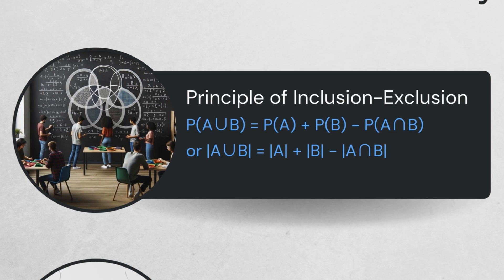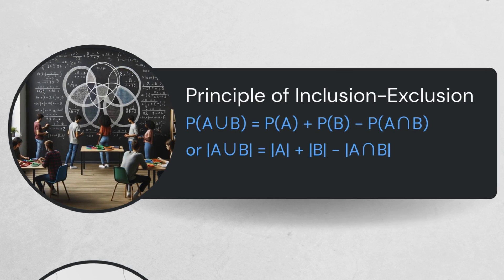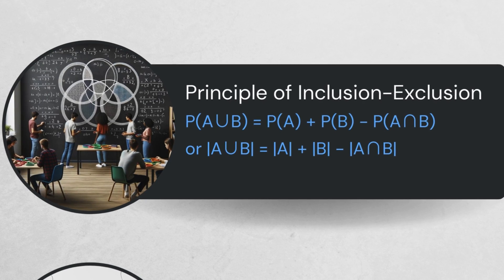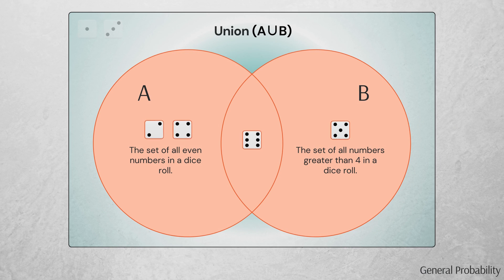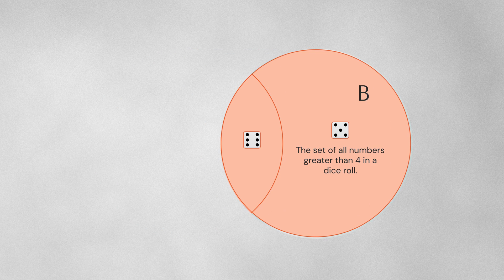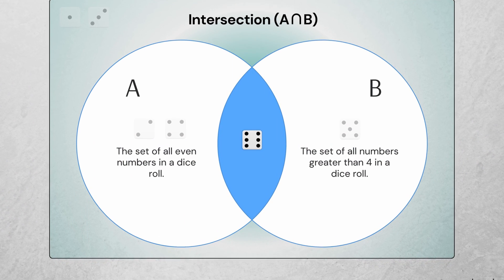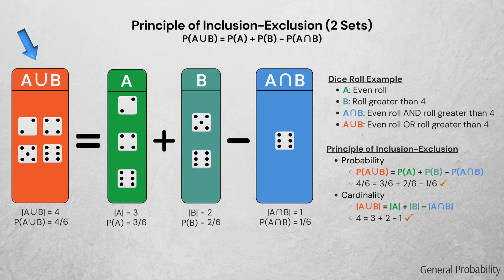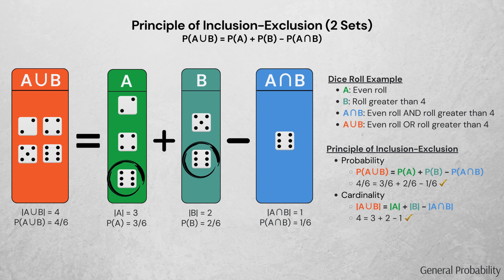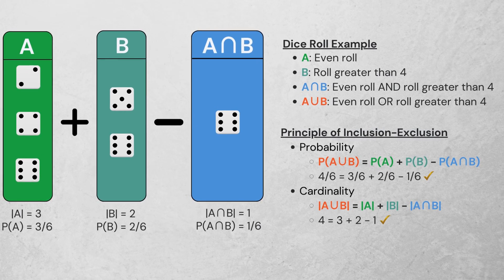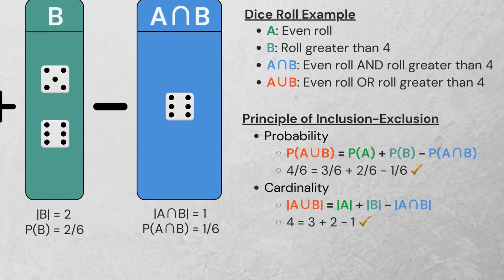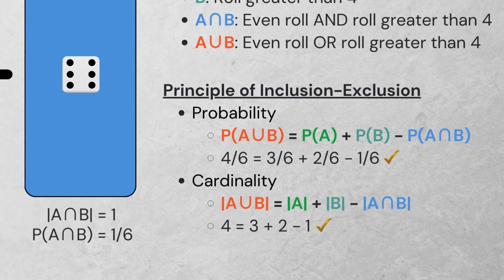The principle of inclusion-exclusion states that the probability of A union B is equal to the probability of A plus the probability of B minus the probability of A intersection B. We can visualize how this works using the example from earlier: A union B contains the rolls 2, 4, 5, and 6; A contains 2, 4, and 6; and B contains 5 and 6. The overlapping element is 6, which is A intersection B. To get the elements in A union B, we can't simply add up the elements in A and B, because the overlapping element, the roll 6, appears in both. So to remove double counting, we subtract one instance of A intersection B. This principle holds true for both probabilities and cardinalities. The version of the formula you use depends on the question — typically, if you're given probabilities, use probabilities, and if you're given cardinalities, use cardinalities.